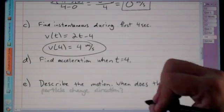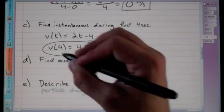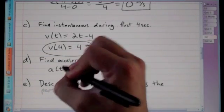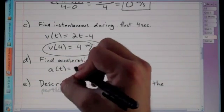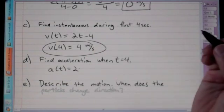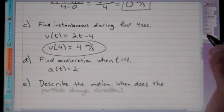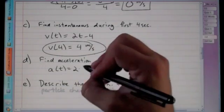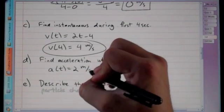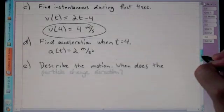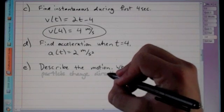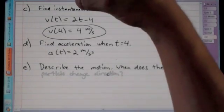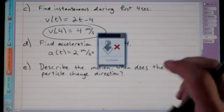For acceleration when t = 4: acceleration is the derivative of velocity. The derivative of v(t) = 2t − 4 is a(t) = 2. There's no variable, so the acceleration is constant at 2 meters per second squared regardless of time.